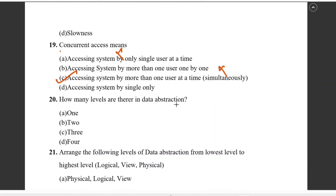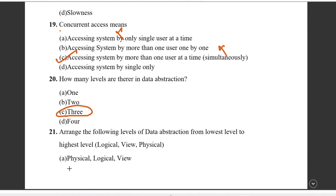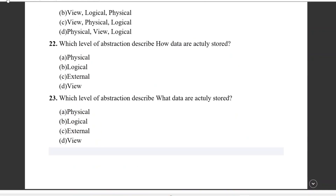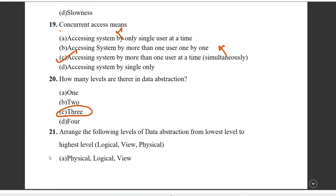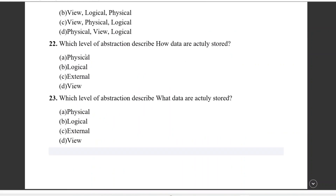Question number nineteen: concurrent access means multiple users accessing the database at the same time simultaneously. Question number twenty: how many levels are there in data abstraction? The levels from highest to lowest abstraction are: physical, logical, and view. The highest abstraction is the physical level.